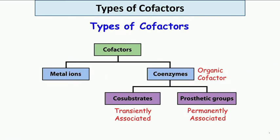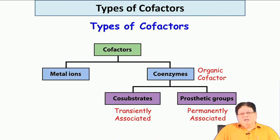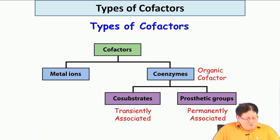There are cofactors which are essential for the enzyme to show its activity. Cofactors can be two types: metal ions or coenzymes. Coenzymes are organic cofactors — if transiently associated they are called co-substrates, and if permanently bound to the enzyme they are called prosthetic groups.